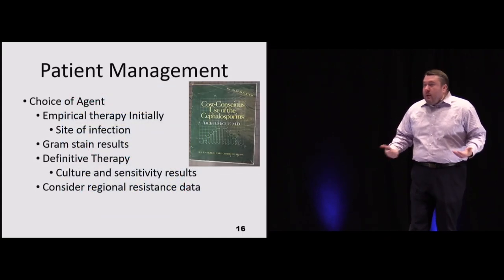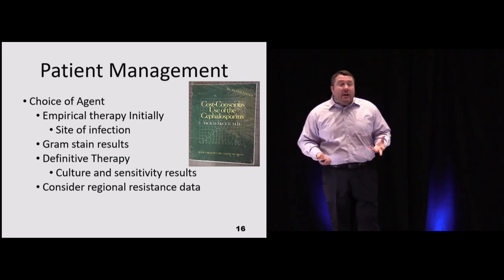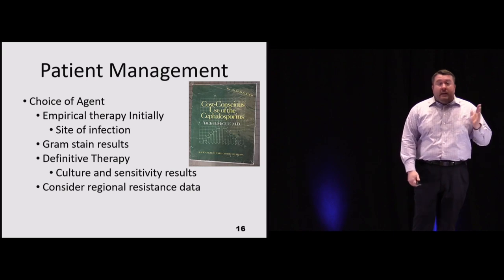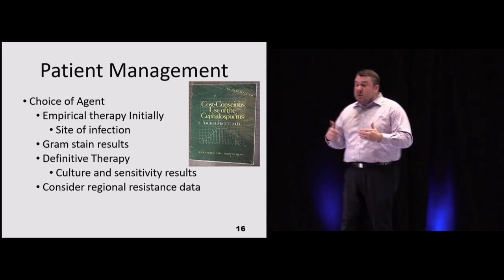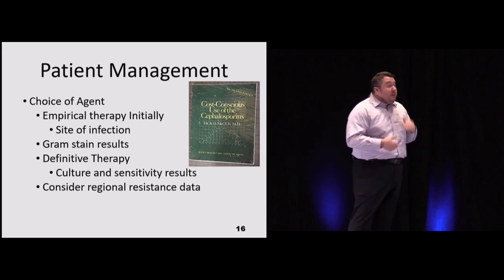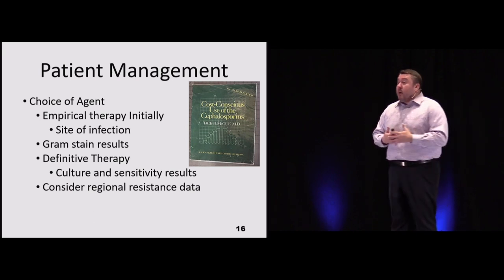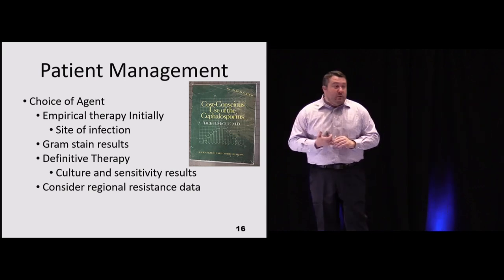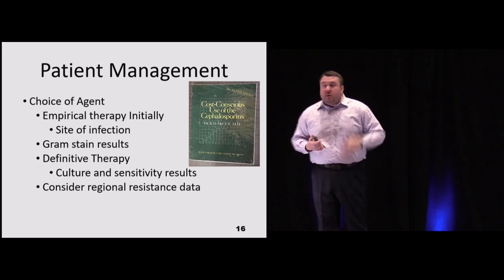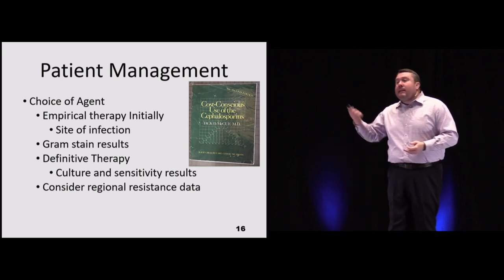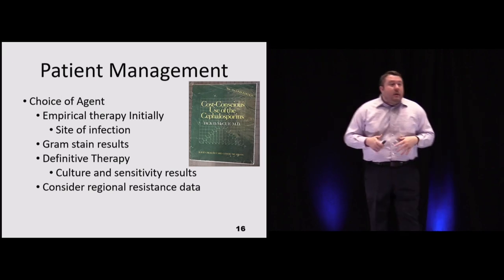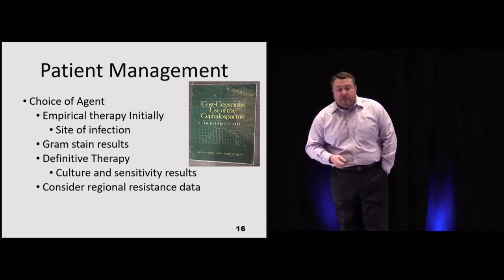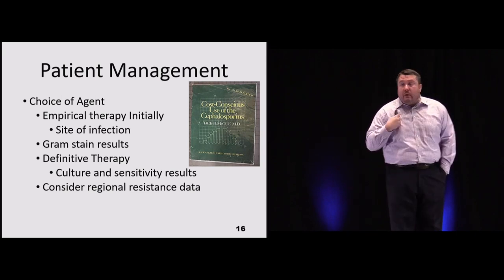For patient management, start empiric therapy based on the suspected infection site — urinary, pulmonary, skin — then get a gram stain to differentiate gram negative from gram positive. Try to reach definitive therapy as soon as possible; cultures typically take 48 hours but help narrow the spectrum. For example, if a community-acquired pneumonia patient admitted on azithromycin and ceftriaxone turns out not to be atypical, the azithromycin can be removed. Always consider regional resistance patterns.